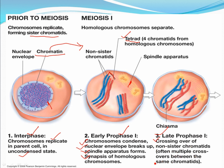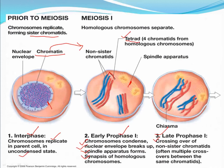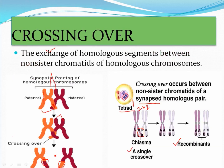Often multiple crossovers occur between the same chromatids. I discussed one crossing over event earlier, but many crossing overs can occur. Here you can see one, two, three crossing overs occurring — meaning multiple crossing overs occur between two chromatids of two different homologous chromosomes. After meiosis, two types of products are formed: the recombinant chromatids and the original chromatids which did not participate in crossing over.